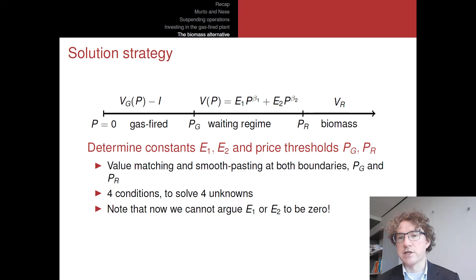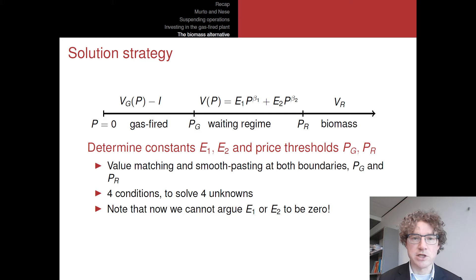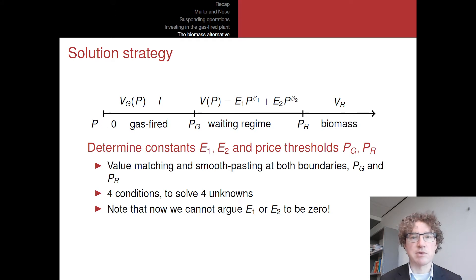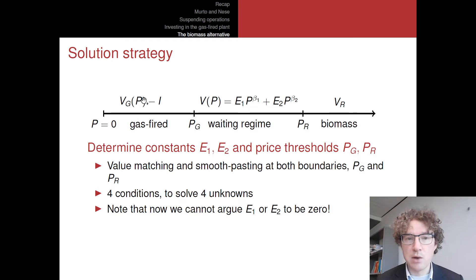For really high P, there must be a regime in which we immediately say let's not wait and make the biomass investment at once. On the other side, for really low P, it's going to be very attractive to make the investment in the gas-fired plant immediately, just like we had before. If P is equal to zero in particular, we get the value of the gas-fired plant. Making the assumption that the gas-fired plant at gas price zero is more attractive than the biomass plant, then certainly for P equals zero we will make the investment in the gas-fired plant immediately. So in this regime on the left-hand side we will get the net present value of investing in the gas-fired plant immediately.